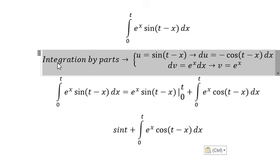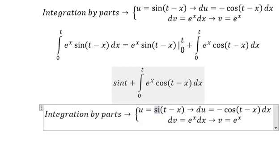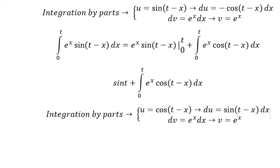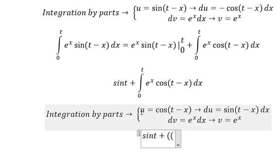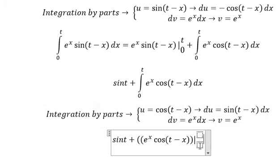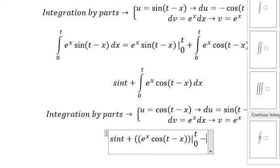Next we do integration by parts. So we change to cosine. This one becomes positive. We have u multiply with v. This one becomes positive and we have the negative, the integration from zero to t.